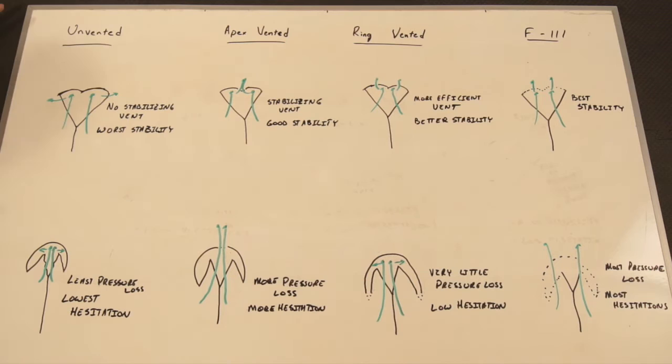An unvented pilot chute has no stabilizing vent and will have the worst stability of any pilot chute. However, it has the least pressure loss during inflation and therefore experiences the lowest overall hesitation rate.